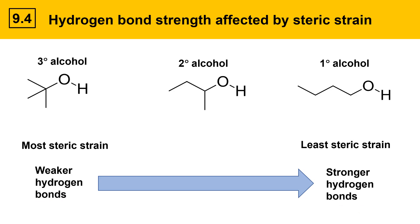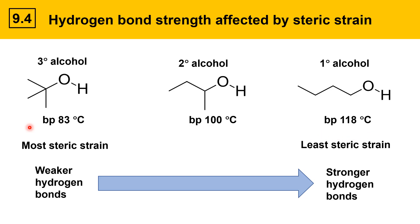Weaker hydrogen bonds form in molecules that are more strained, and stronger hydrogen bonds form in molecules with less steric strain. This is reflected in the boiling points. The tertiary alcohol has a boiling point of 83 degrees Celsius. The secondary alcohol has a boiling point of 100 degrees Celsius, indicating stronger intermolecular forces compared to the tertiary. The primary alcohol has the highest boiling point at 118 degrees Celsius because it forms the strongest hydrogen bond. There is also a surface area component, but the primary factor is the strength of the hydrogen bonds.